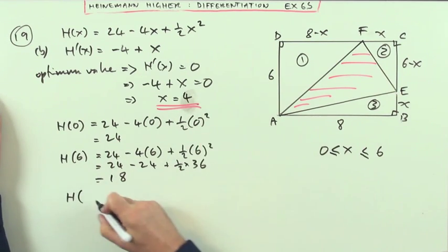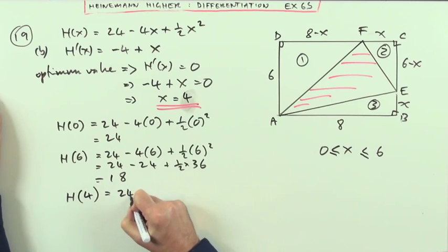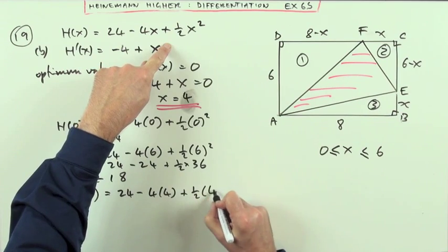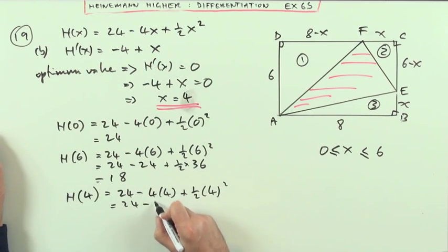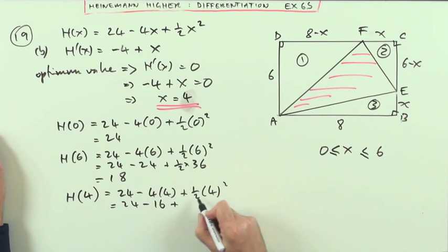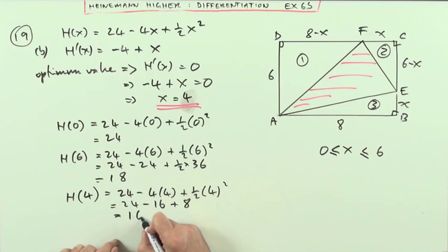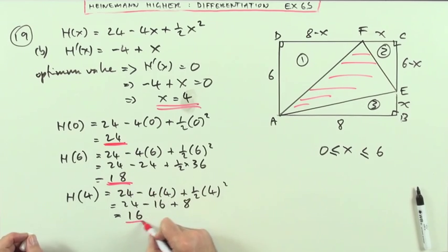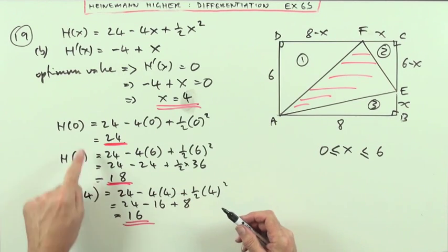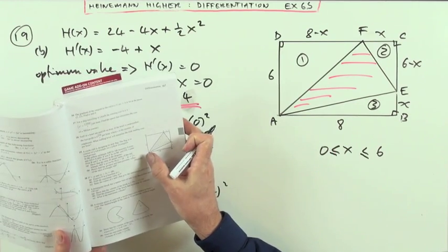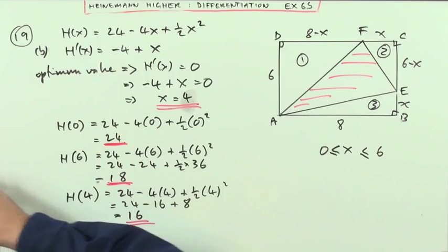But what happens at this optimum value of 4? We'll put that in. I've got 24 minus 4 times 4 plus a half of 4 squared. So that's 24 minus 16 plus, and that's going to be 8. So that's just like taking away 8 from that. So that's going to be 16. So there's my three answers. And then it's simply a case of deciding which is which. Which is the biggest? That's the maximum. So the question, what was the wording again?